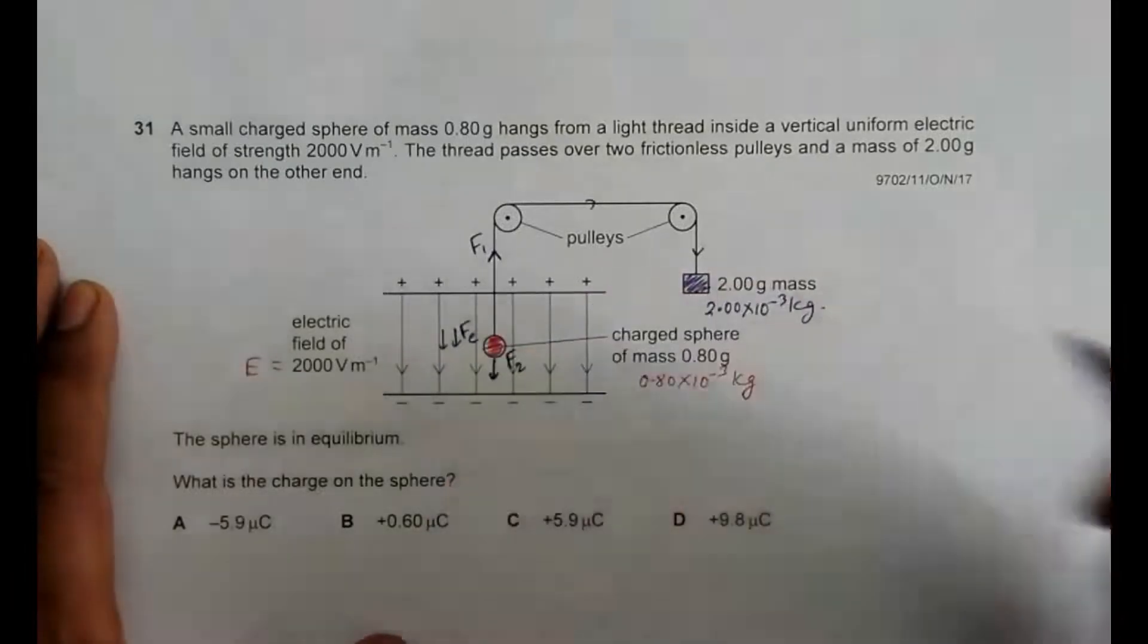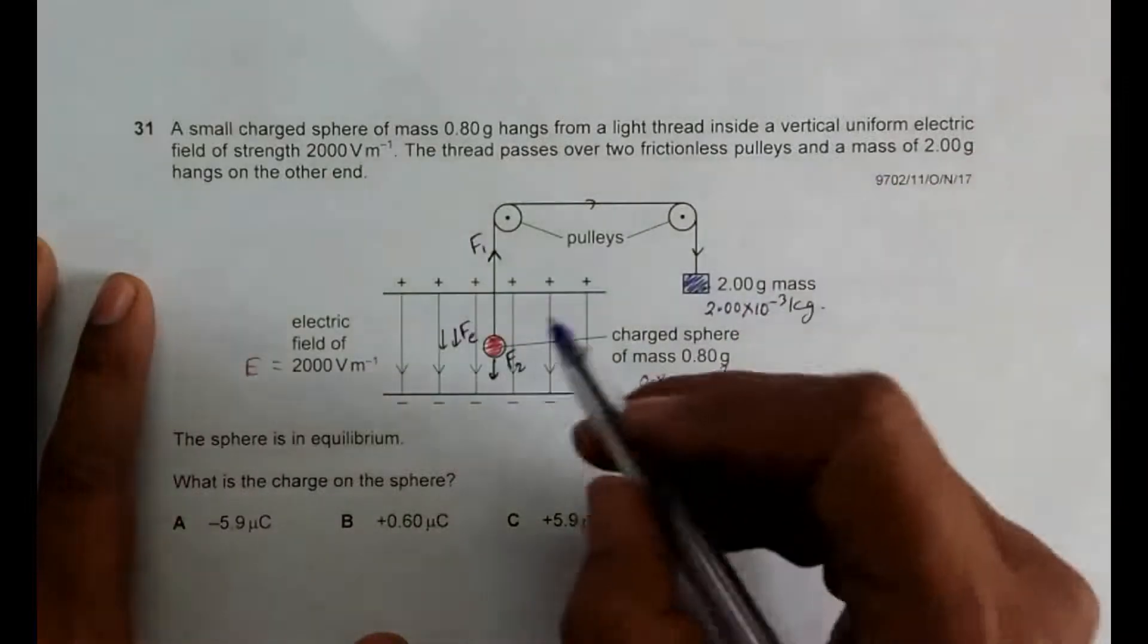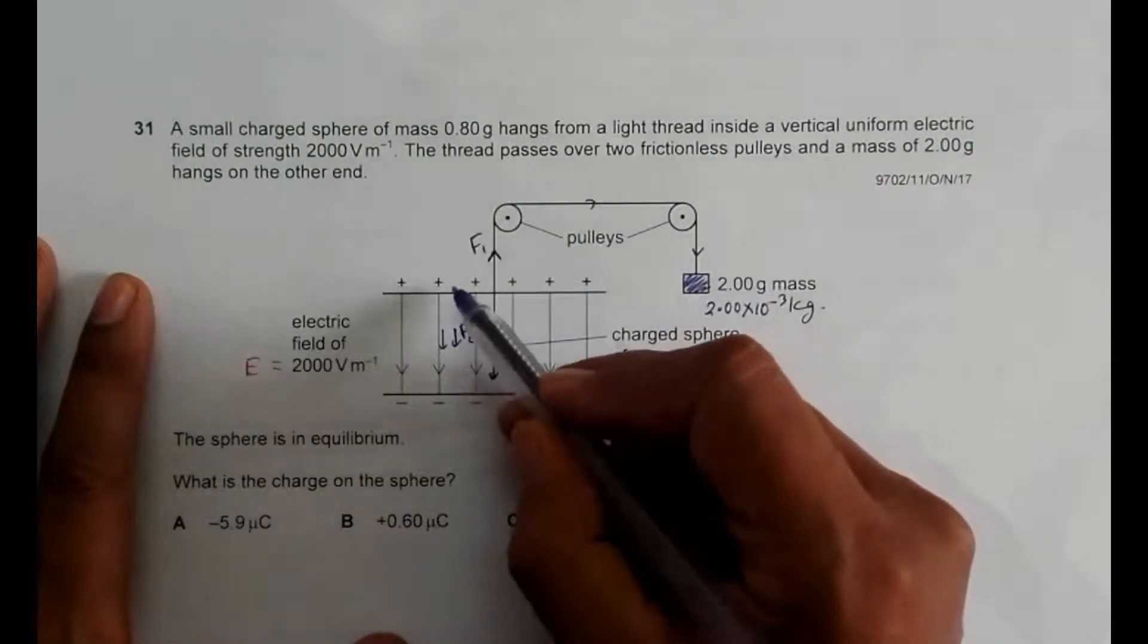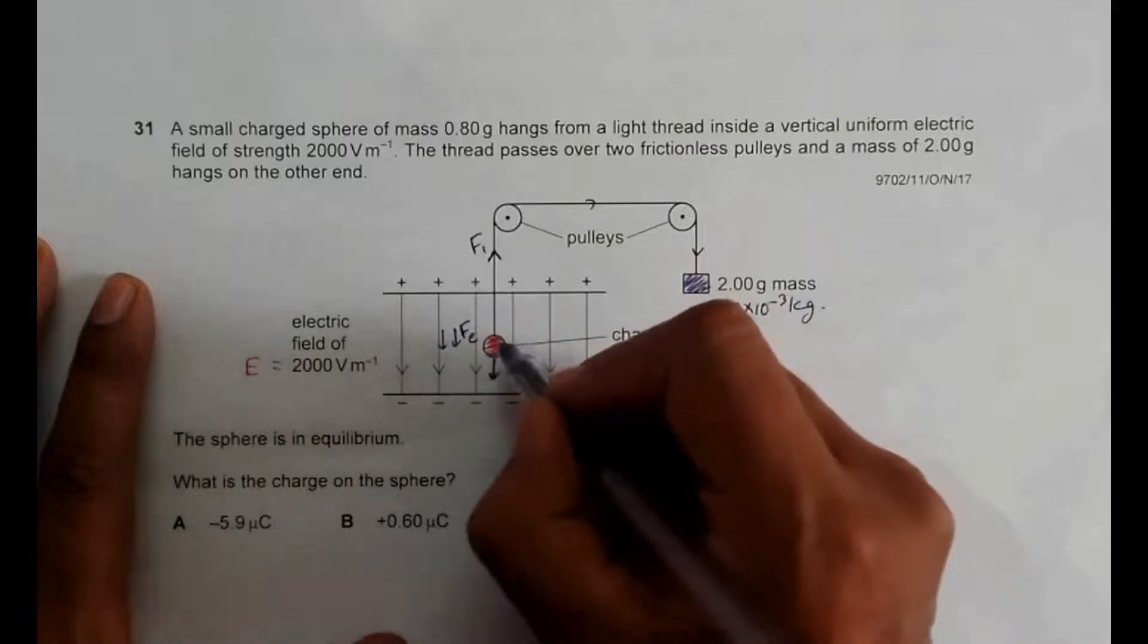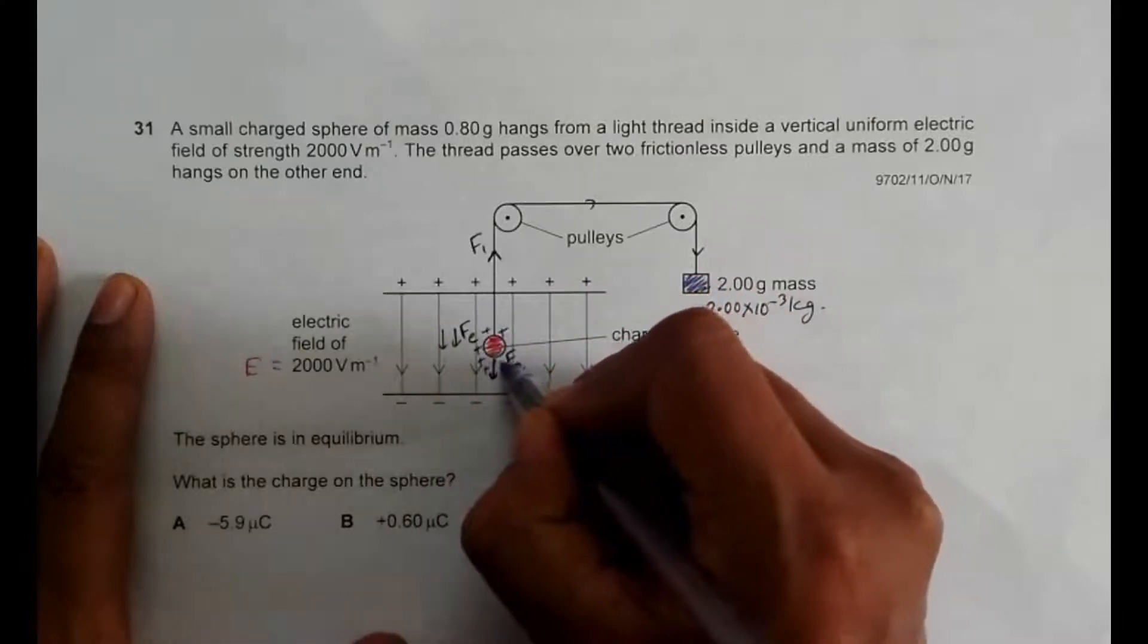So that means the force is like this, which is the electric force. That means since the force is downward, the charge body should be a positive charge.